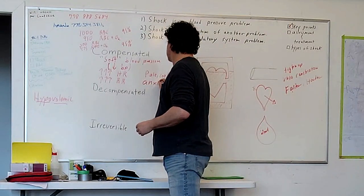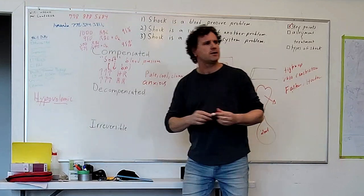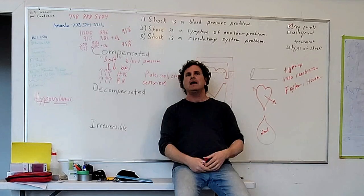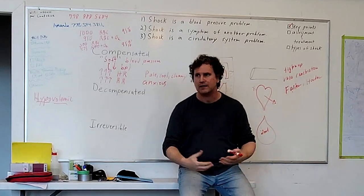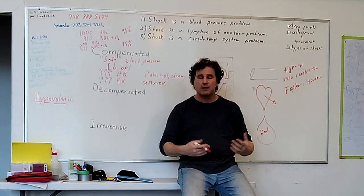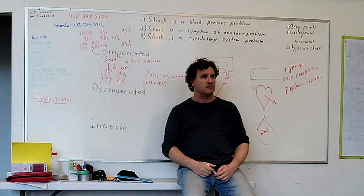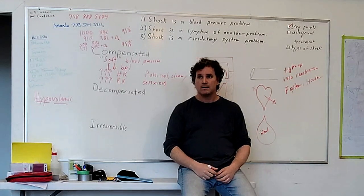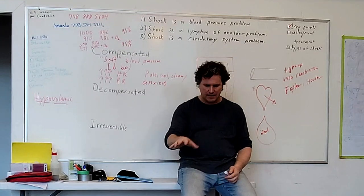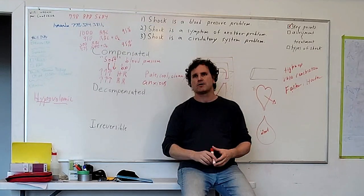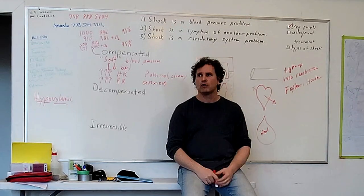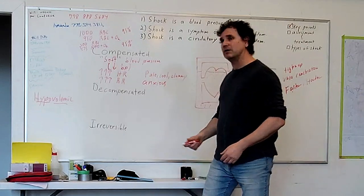Another sign in compensated shock: the patient is anxious, probably not confused yet — the brain is still being perfused. But the brain knows something isn't right, so the patient is going to be a little worked up and anxious. Signs of internal hemorrhage include hard or rigid abdomen, abdominal pain, and bruising — particularly in the upper left quadrant where the spleen is, which is the biggest risk for internal bleeding.